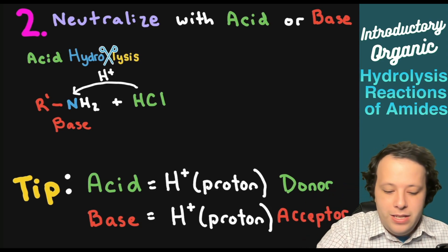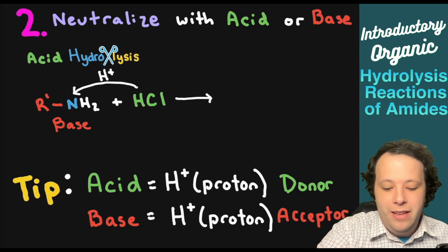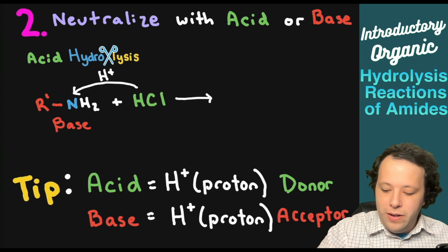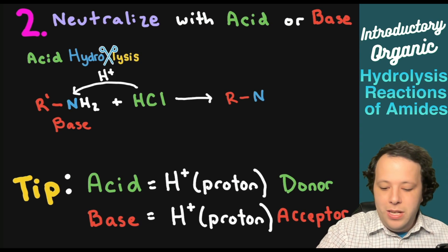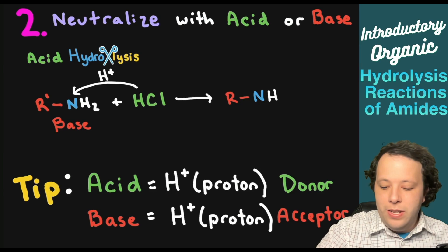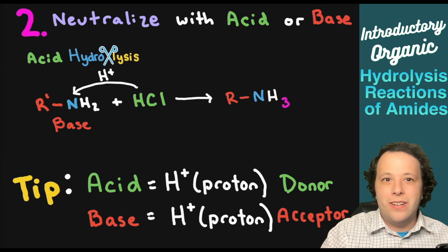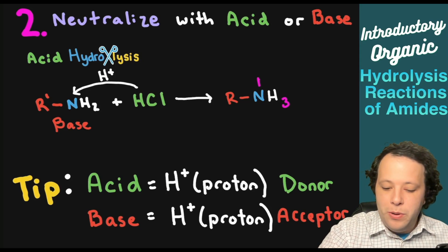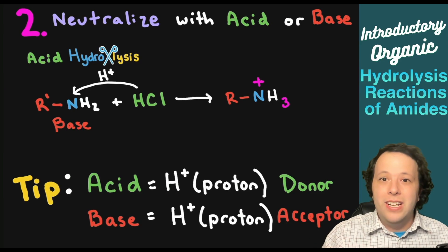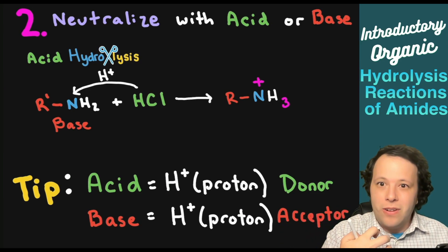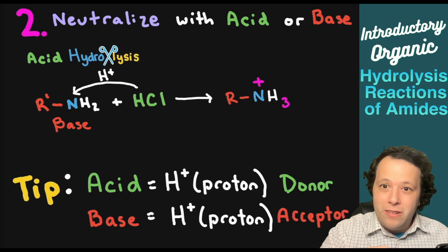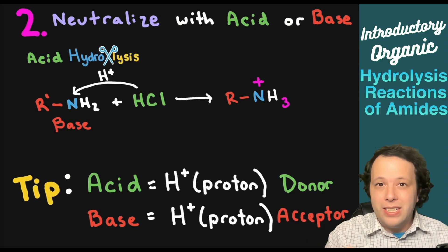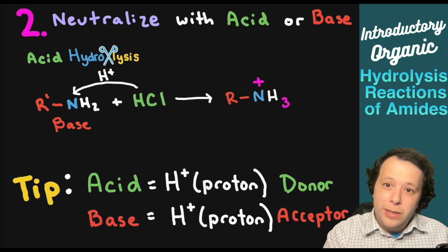HCl is one of your strong acids, meaning it's going to donate a proton. The amine will receive it — so this will be the second step if it's in an acidic condition. We'll write that amine with an extra hydrogen added, going from two to three hydrogens, and we put a positive charge on the nitrogen to show it accepted an extra hydrogen on the lone pairs of the nitrogen atom. If you have acid hydrolysis it's a little bit easier.